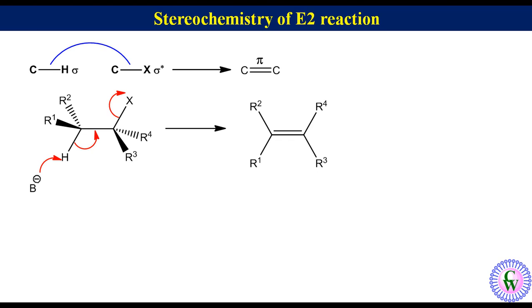For the best overlap, H and X should be anti-periplanar. If we view from this side, the Newman projection of this anti-conformation will look like this.